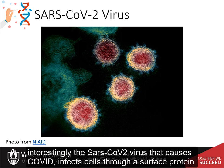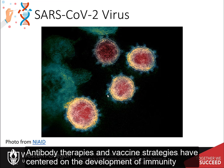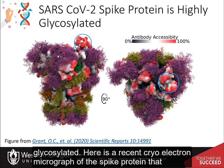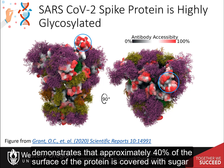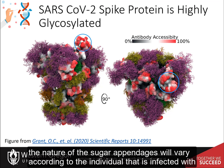The SARS-CoV-2 virus that causes COVID infects cells through a surface protein known as the spike protein. Antibody therapies and vaccine strategies have centered on developing immunity towards the spike protein, but this hasn't been simple because the spike protein is highly glycosylated. A recent cryoelectron micrograph of the spike protein demonstrates that approximately 40% of the protein's surface is covered with sugar modifications, shown in purple, gold, rust, and green colors. The nature of the sugar appendages also varies according to the individual infected with the virus.